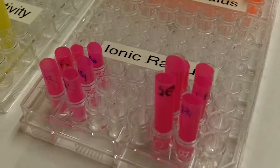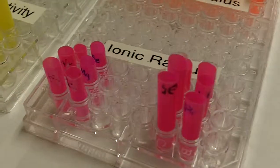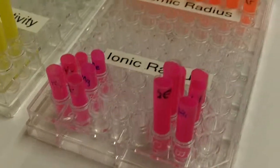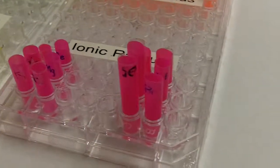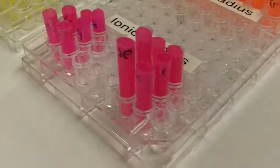And lastly, with the ionic radius, the cations, which are on the left, are always going to be smaller than their original counterparts above because they lost an electron. Anions on the right are always going to be bigger because they gained an electron, and they'll always be negatively charged.